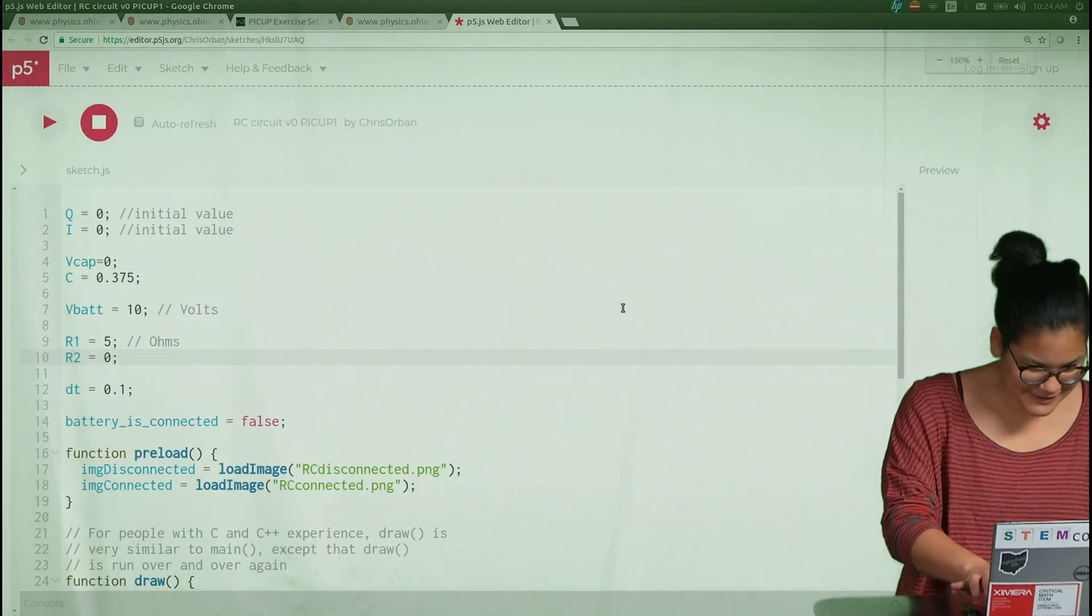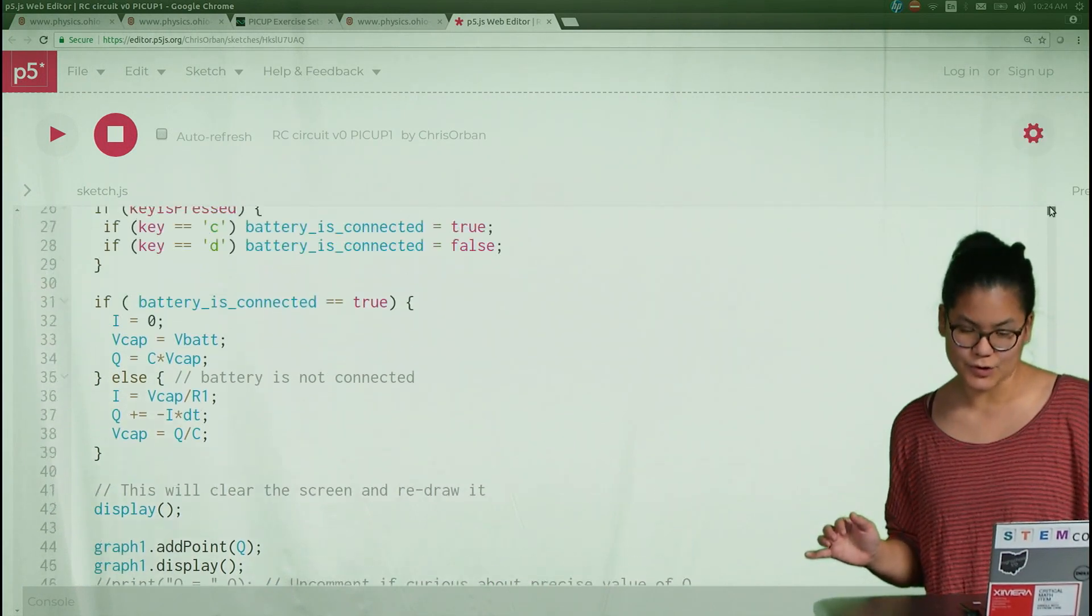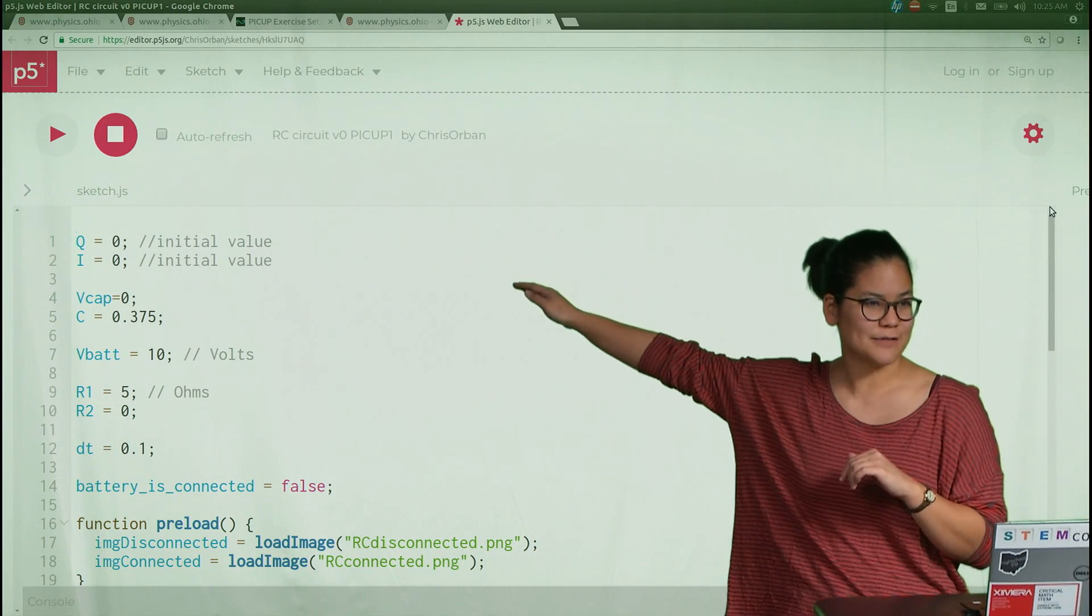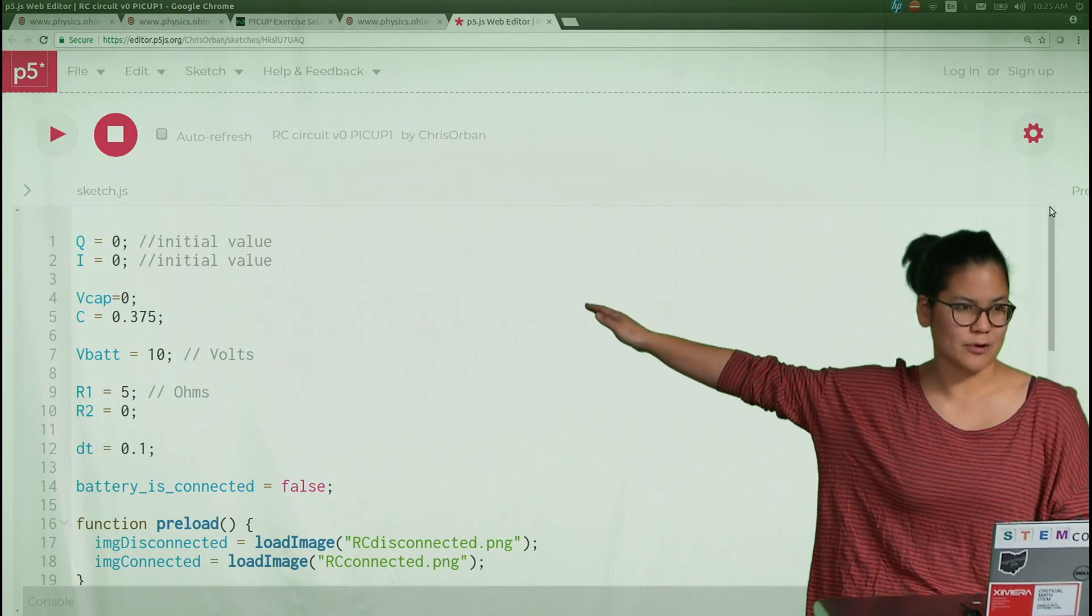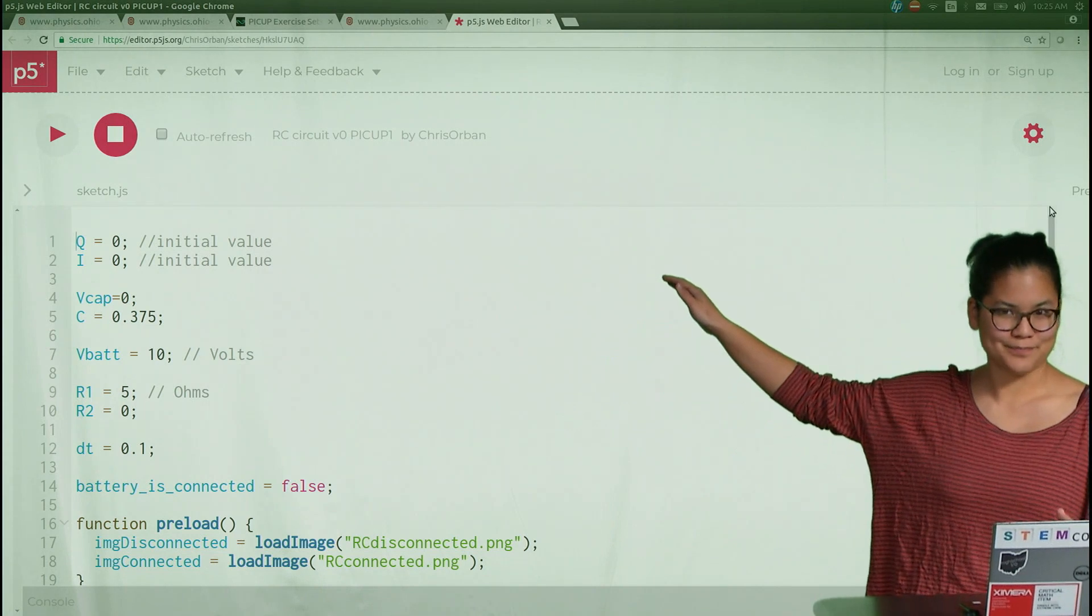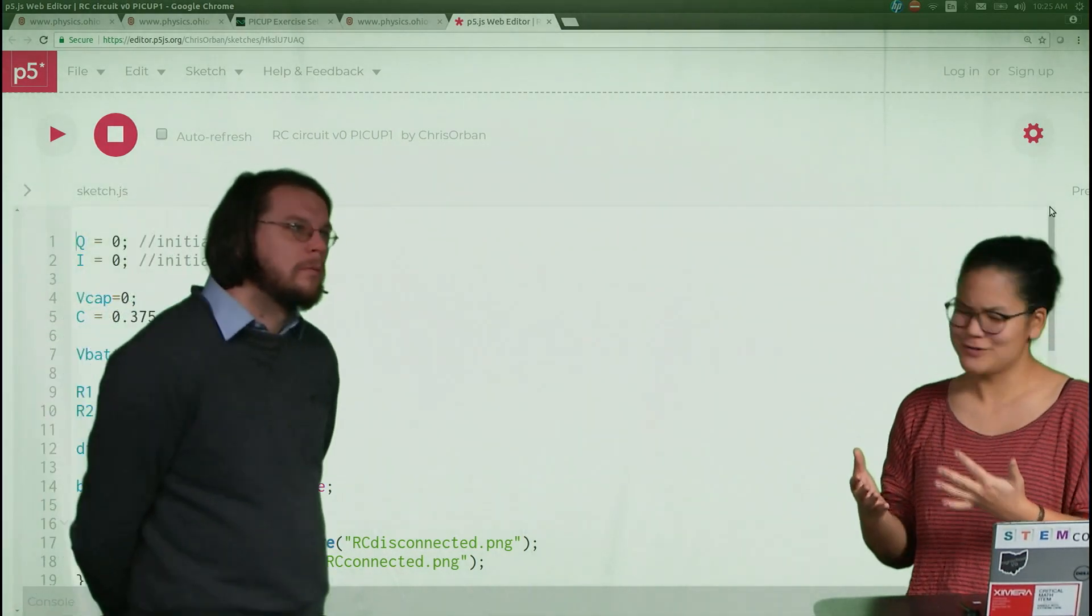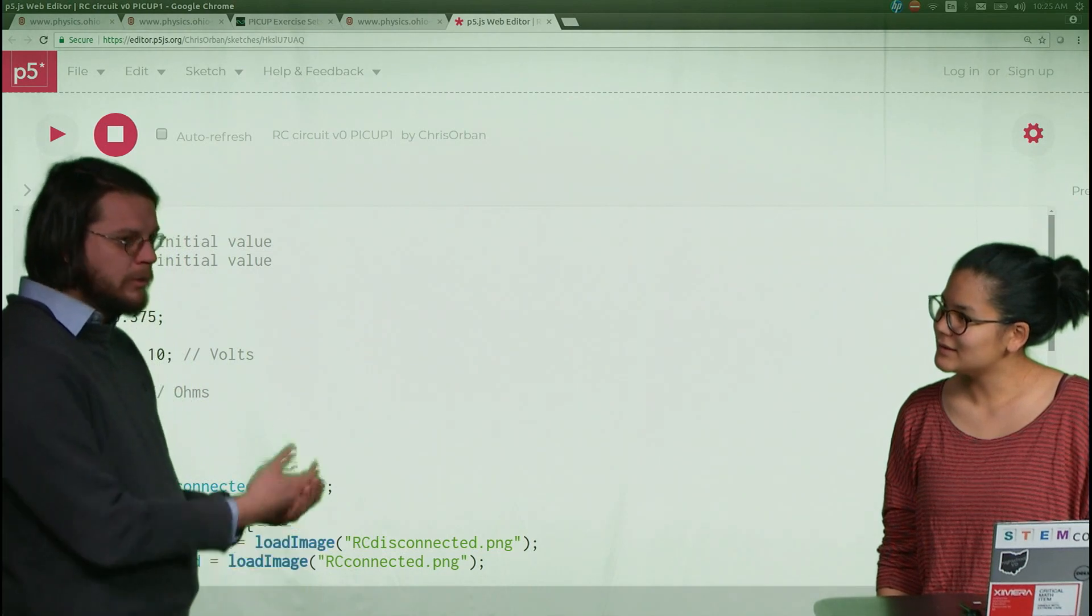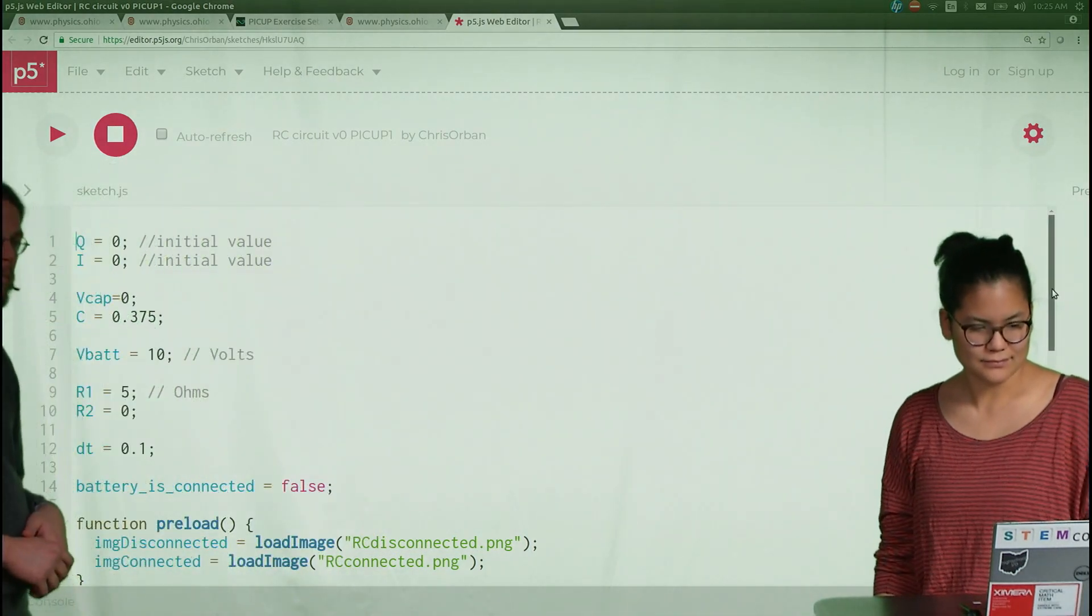This looks a little different from the codes we've been using because it is the first one that deals with circuits. Why don't you give us a tour of what's there? This Q here is the charge stored on the capacitor, which we initially start at zero because it's not connected to the battery. We initially don't have current going and nor a voltage drop across the capacitor.